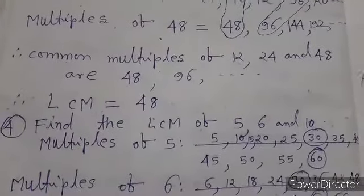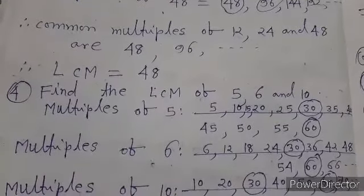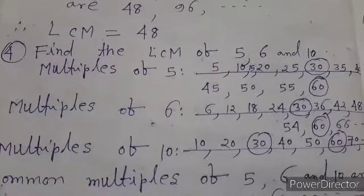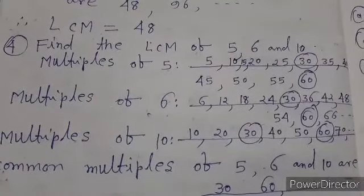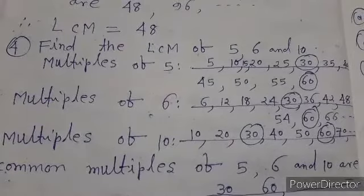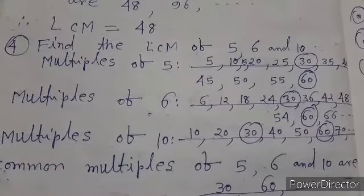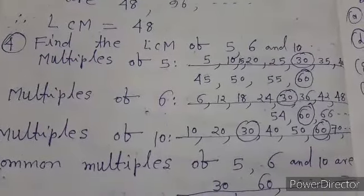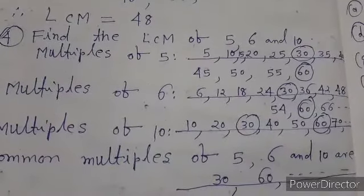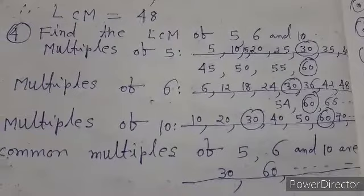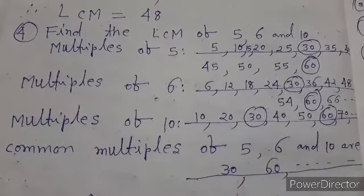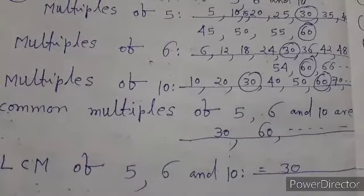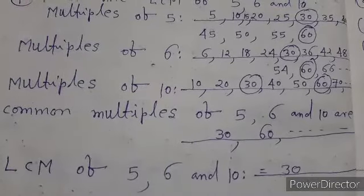In question four, to find the LCM of five, six, and ten, we make a list of multiples. Multiples of five: five, ten, fifteen, twenty, twenty-five, thirty, thirty-five, etc. Multiples of six: six, twelve, eighteen, twenty-four, thirty, thirty-six, forty-two, forty-eight, fifty-four, sixty-six, etc. Multiples of ten: ten, twenty, thirty, forty, fifty, sixty, seventy, and so on. Thus, the common multiples of five, six, and ten are thirty and sixty. Hence, LCM of five, six, and ten is equal to thirty, because thirty is the smallest common multiple.